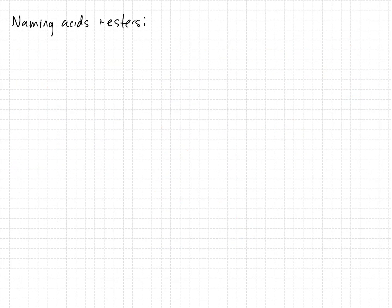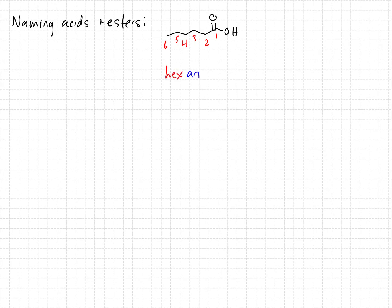Let's apply this to name acids and esters. To name a carboxylic acid, I follow the same procedure used for naming an aldehyde — number the parent chain. This is a six-carbon carboxylic acid. The parent functional group must be carbon number one. It has no unsaturation, so I'm going to call it hexanoic acid.